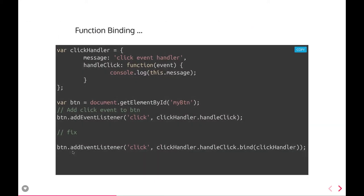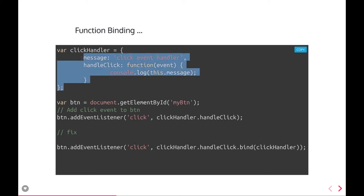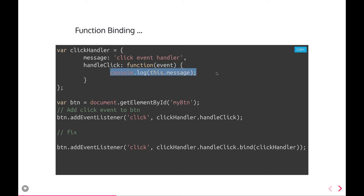Function binding: whenever we do DOM event handling, we use function binding on event handlers. We have a button and we add an event listener with addEventListener, so when you click that button, a particular function gets executed. That function prints this.message — but when you actually click the button, you get 'undefined' because you are trying to access the 'this' object outside its lexical scope.